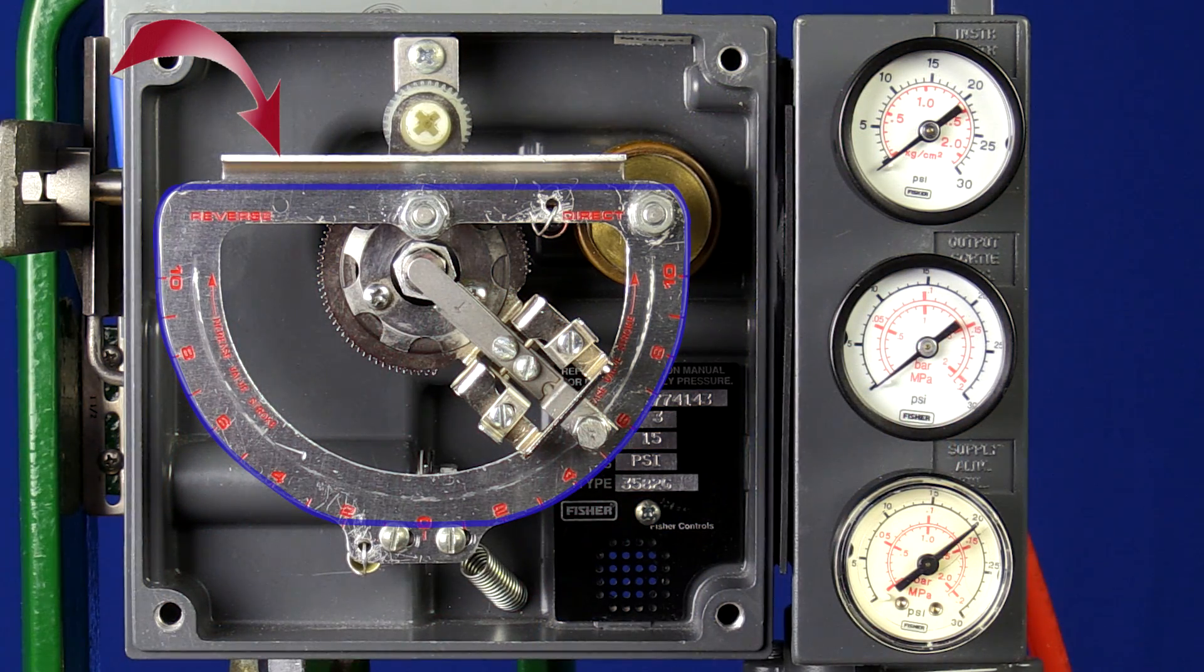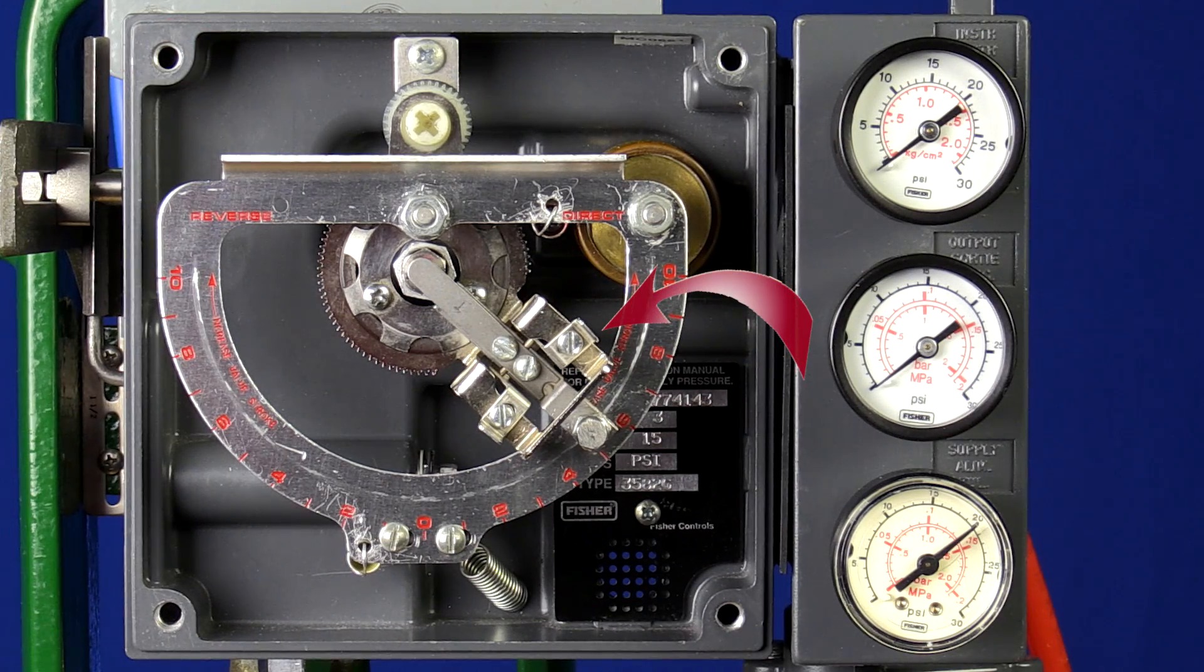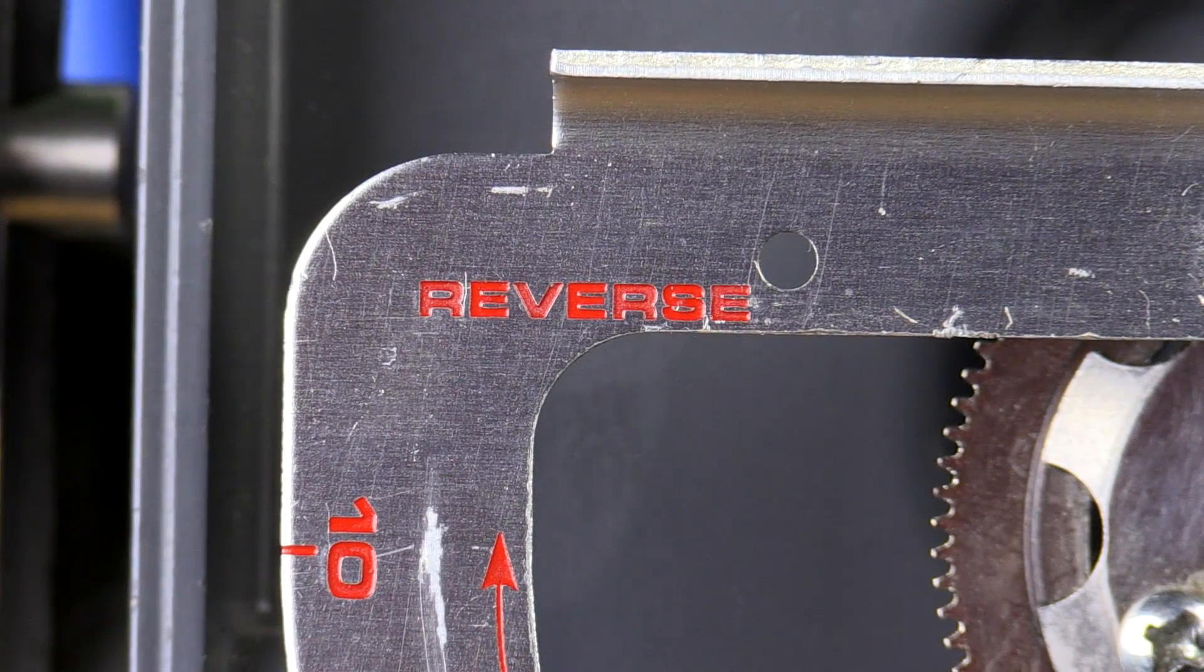The D-shaped beam here is the summing beam and is the component this flapper assembly moves around on. Notice the summing beam is labeled direct, over here, and reverse, over here.